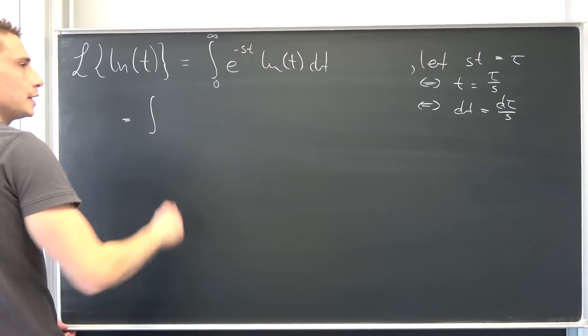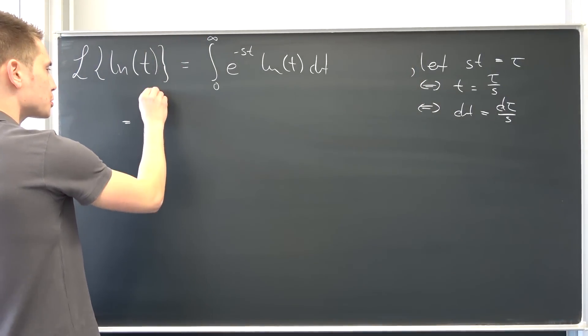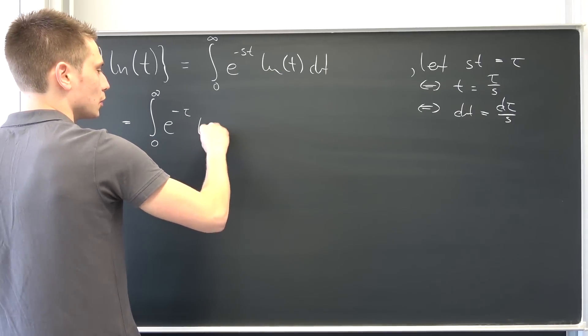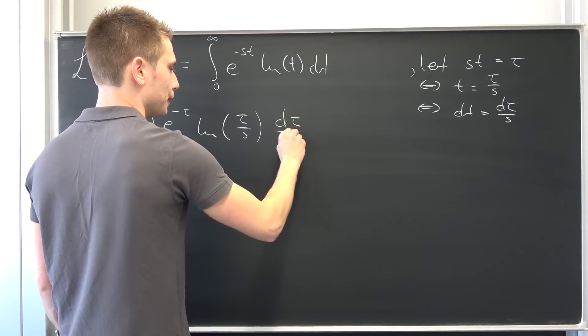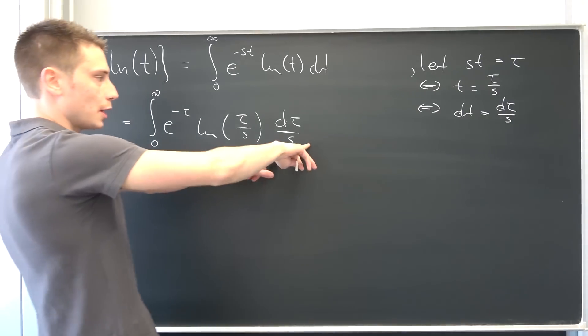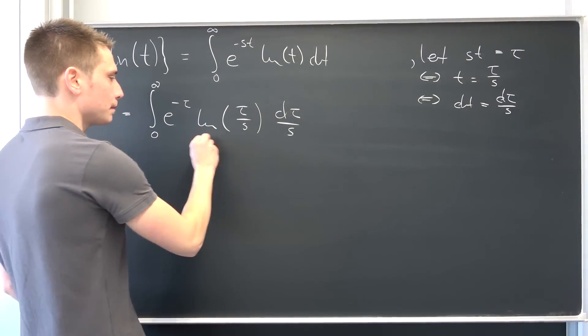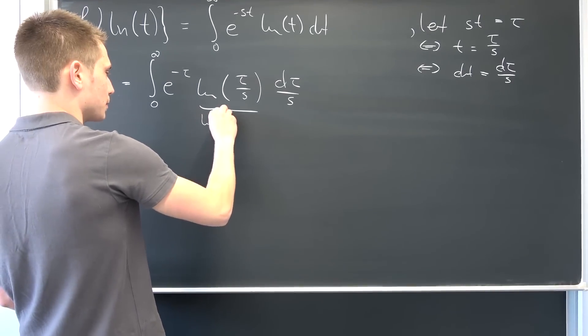And we can plug this new stuff into here, integral running from zero to infinity, nothing's really going to change, of e to negative tau natural log of tau over s, d tau over s. We can bring the 1 over s to the outside and you see natural log of a over b is going to evaluate to natural log of a minus natural log of b, so that's nothing but natural log of tau minus the natural log of s.